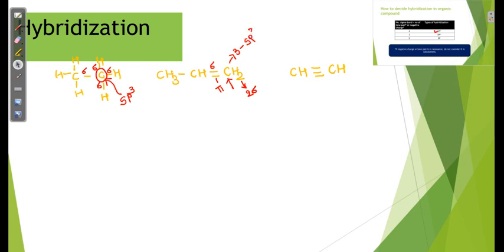Similarly, the other sp2 carbon in CH= has three sigma bonds total (two from the C=C framework and one from hydrogen), so hybridization is sp2. For the terminal carbon in C≡CH, there is one sigma bond from hydrogen and one sigma bond from the triple bond — the two pi bonds are not counted — giving a sum of two, so hybridization is sp.